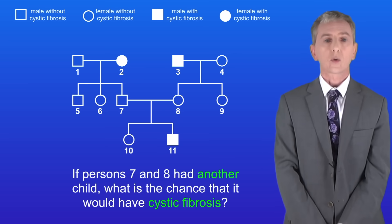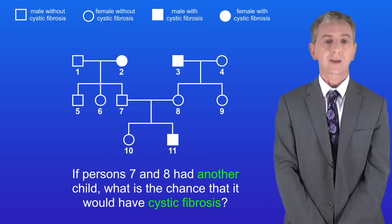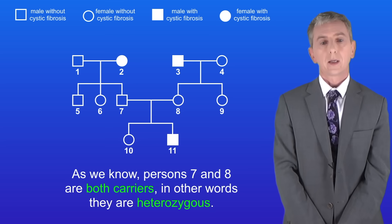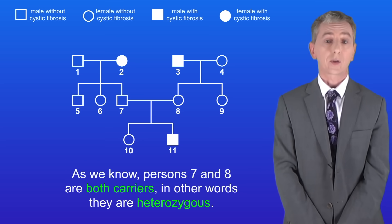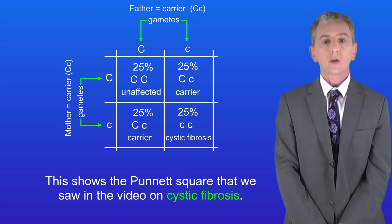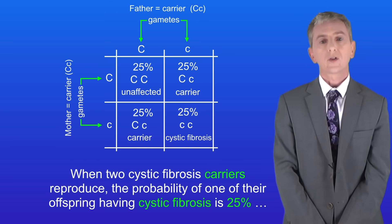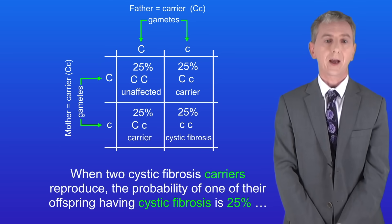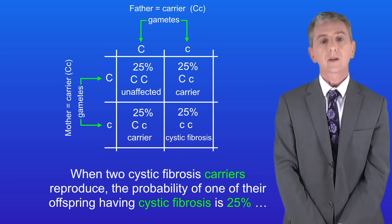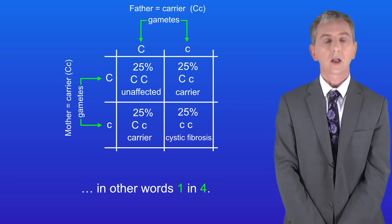Here's the third question: if persons 7 and 8 had another child, what's the chance that it would have cystic fibrosis? As we know, persons 7 and 8 are both carriers — in other words they're heterozygous. They've got one copy of the defective allele and one copy of the normal allele. Here's the Punnett square we saw in the video on cystic fibrosis. When two cystic fibrosis carriers reproduce, the probability of one of their offspring having cystic fibrosis is 25%, in other words one in four.